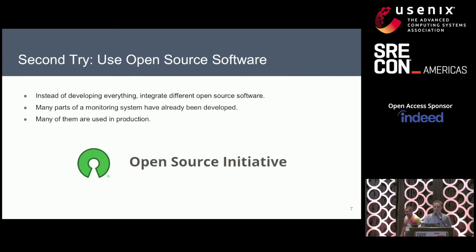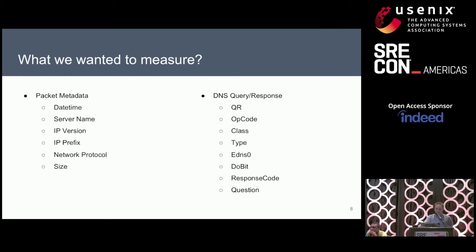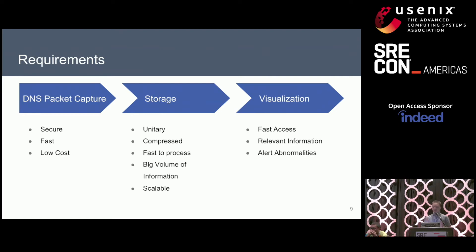We started looking at open source solutions currently used to monitor different systems. We looked at many available options that capture different information and allow us to present it in an easy way for different people on a team to see the data. We started looking for some of the meta information about the DNS packets we are receiving, such as where the packet is hitting the servers, the IP versions, the prefix, the network protocol, the size of the packet, and also information inside the DNS packet like what domain we are looking for, the opcode, the class, and the response code. We separated every problem into three different stages: the capture of the information, the storage of the information, and the visualization.